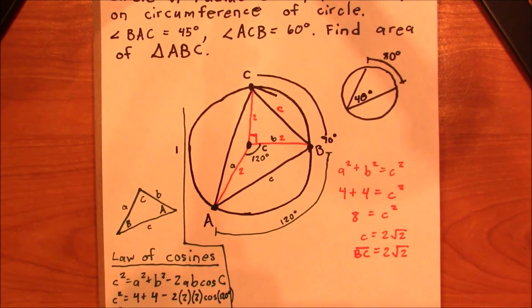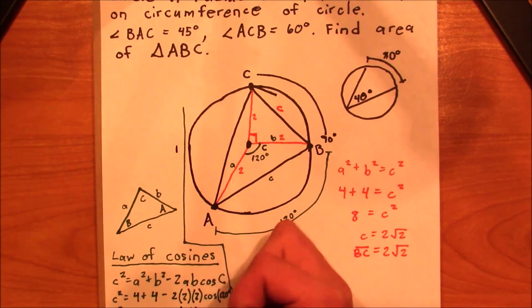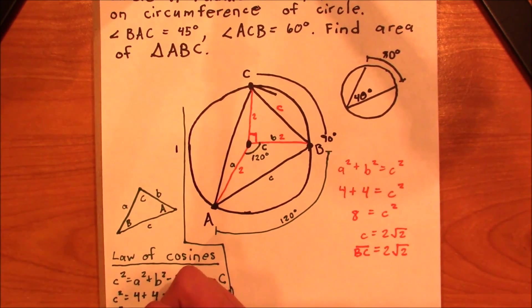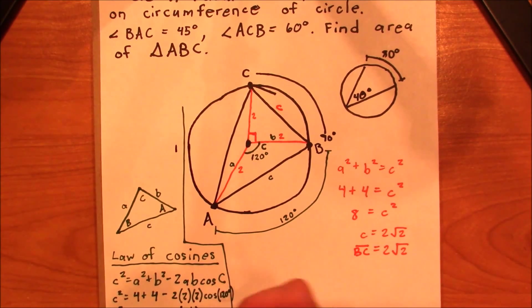now what's the cosine of 120 degrees? This is actually going to be the negative version of the cosine of 60 degrees. So the cosine of 60 degrees is just 1 half, and so this is going to be negative 1 half. So we get c squared equals 8 plus 4, which is equal to 12, therefore c has to equal 2 root 3.